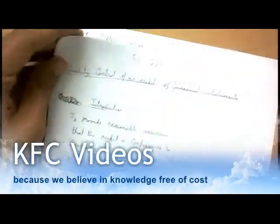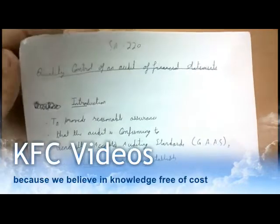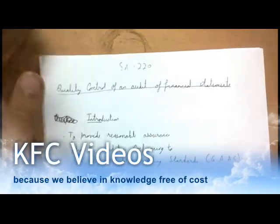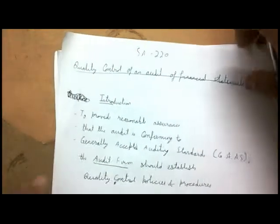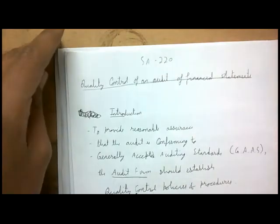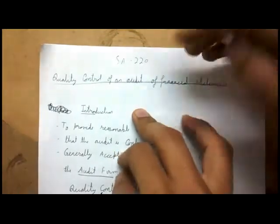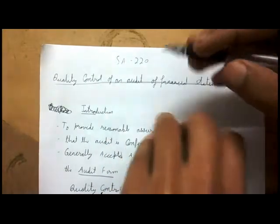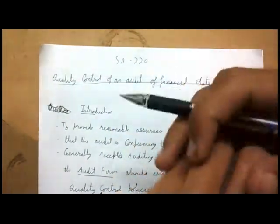This video is on SA 220, regarding the quality of the audit. We want to ensure that the audit is conducted in a good quality manner. The name of this standard on auditing is 'Quality Control of an Audit of Financial Statements' — we want to ensure that the audit is done in a good quality way.